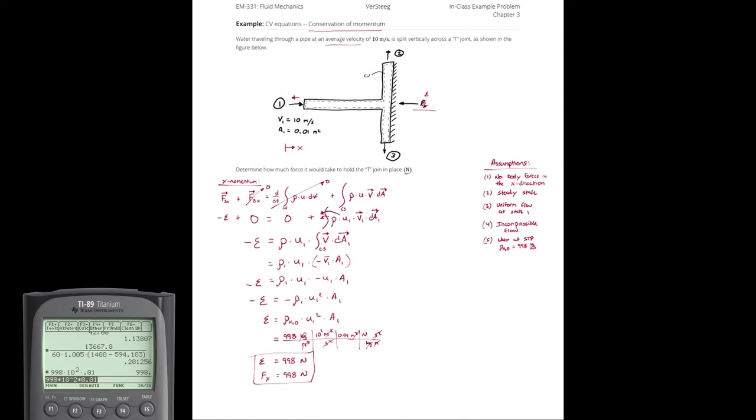All of that momentum has to be resisted in order for the joint to not move. Therefore, all of the force associated with that moving stream of water is going to be absorbed in the x direction. So my epsilon value has to counteract that.